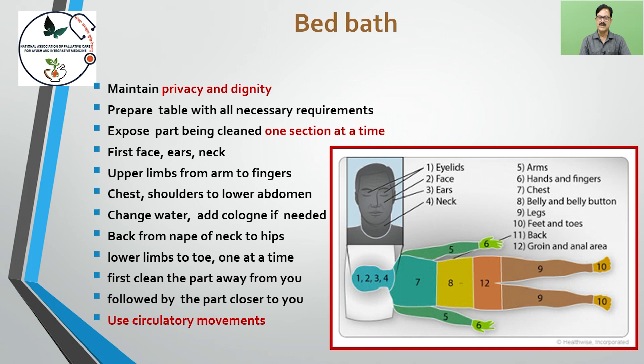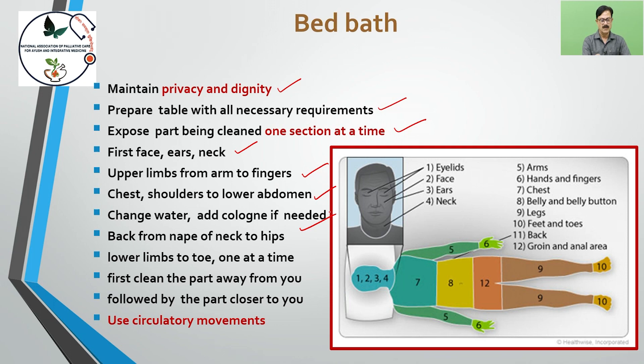During bed bath, maintain the privacy and dignity of the patient. Prepare the table with all necessary equipment. Expose the part being cleaned one section at a time: first the face, then ears, neck, upper limbs from arms to fingers, chest, shoulders to lower abdomen. Change water and add cologne if needed. Then clean the back of neck to hips, and lower limbs to toes one at a time. First clean the part away from you, followed by the part closer to you. Use circular movements.